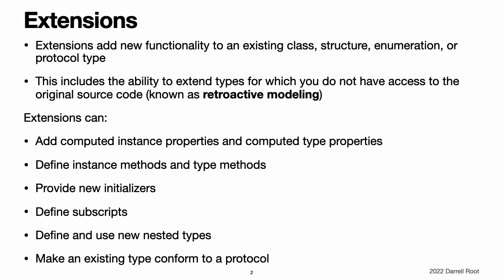This includes the ability to extend types for which you do not have access to the original source code, known as retroactive modeling. Extensions are similar to categories in Objective-C. Unlike Objective-C categories, Swift extensions do not have names.